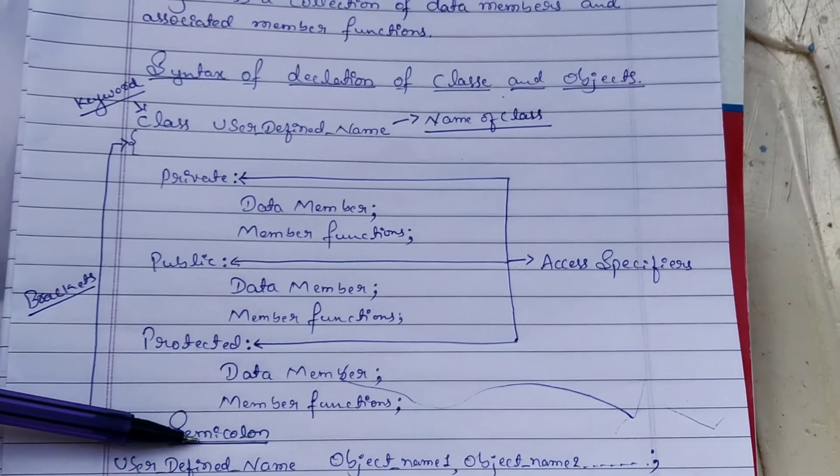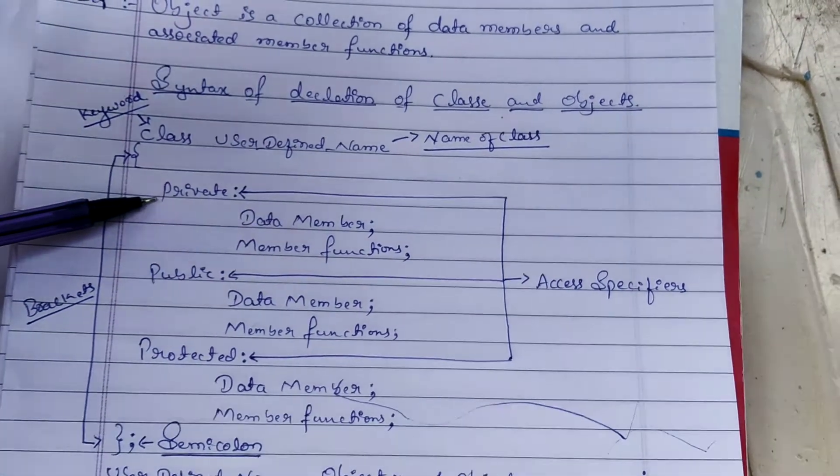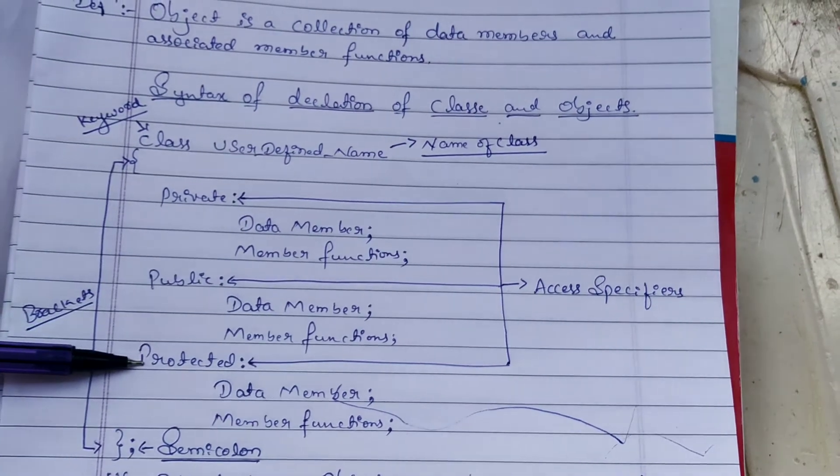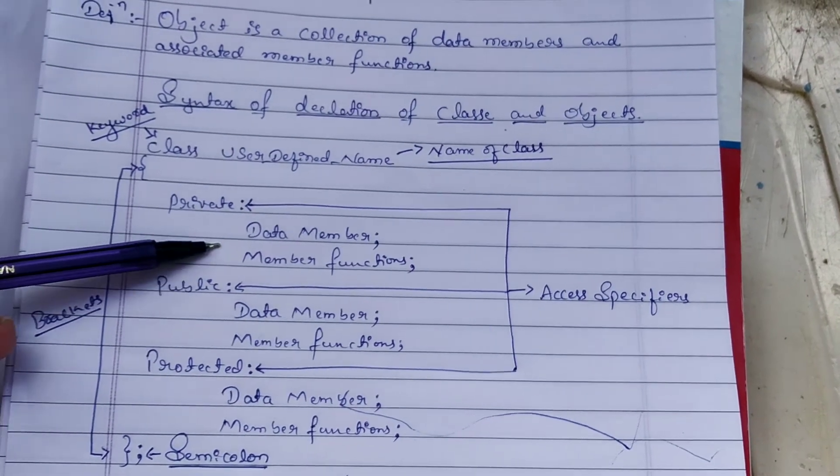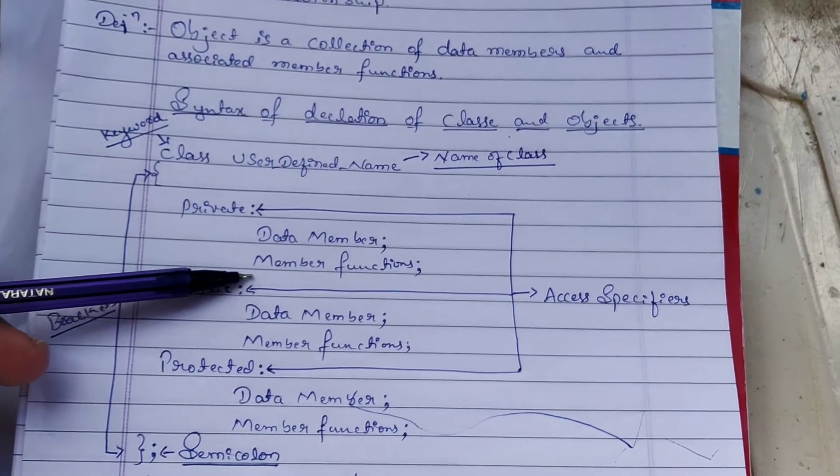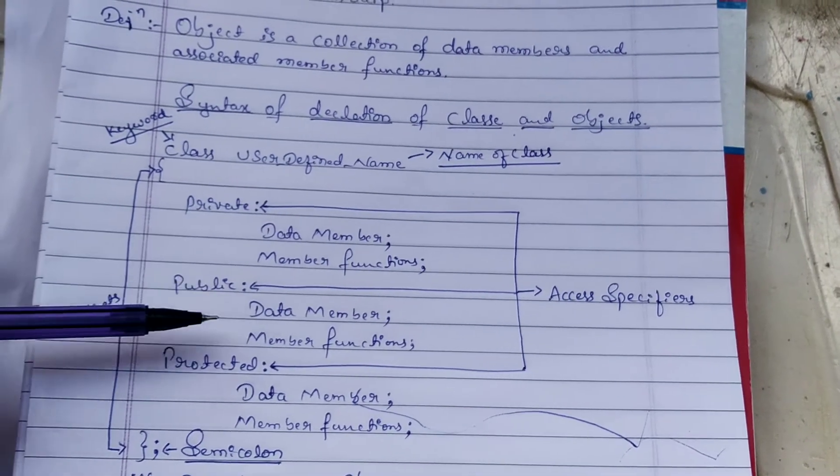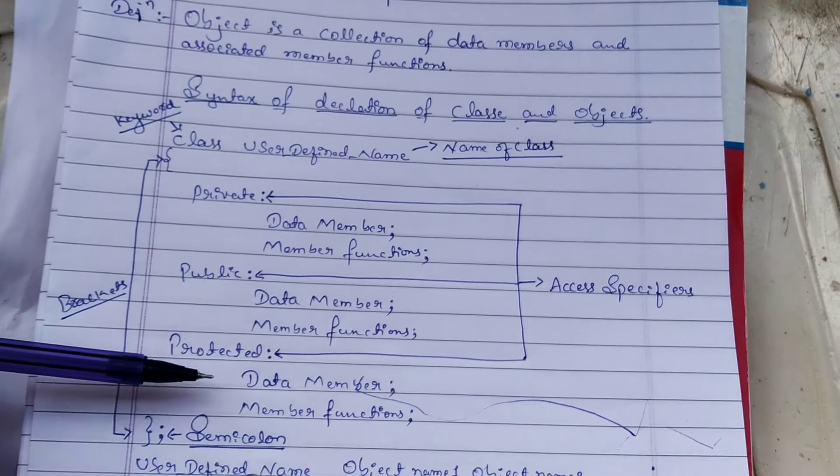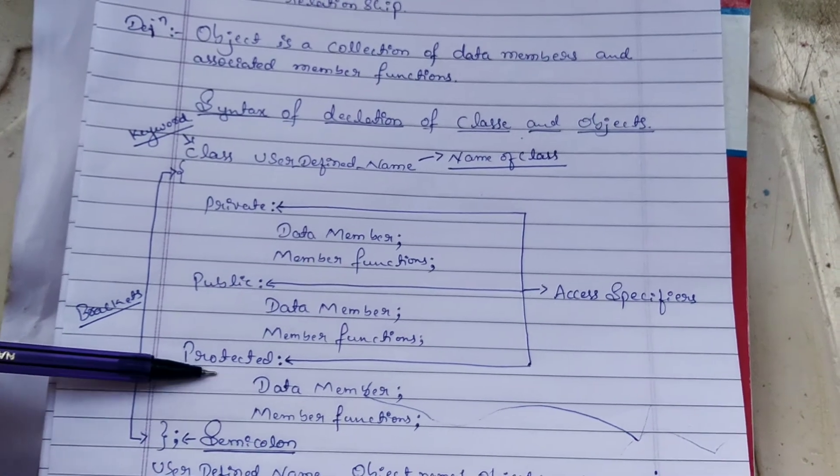Inside the brackets, we have private, public, and protected as access specifiers. Data members and associated member functions are written within private access specifiers, and also in public and protected access specifiers. This is the syntax for a class.